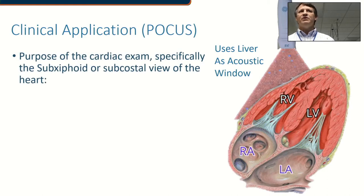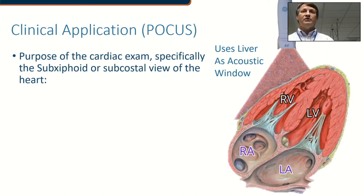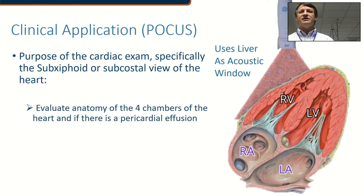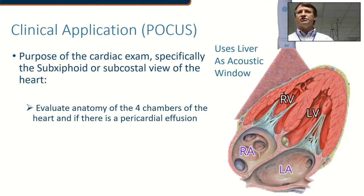You may want to look at the function of the four chambers, the function of the valves, or the squeeze. You can even see the aortic outflow or the pulmonary trunk outflow in these views with a slight adjustment, and you can see the connection to the lungs with the pulmonary veins. We want to evaluate the anatomy of the four chambers and see if there are any pericardial effusions.